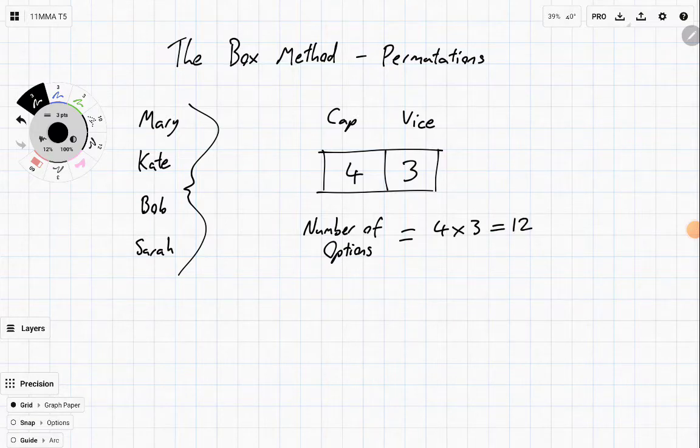Now imagining for a second we also had a third position. Maybe we have the captain, the vice, and maybe we have some kind of chair position. So we have cap, vice, and a chair head.